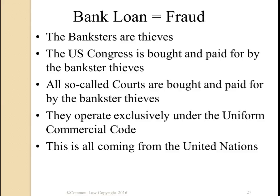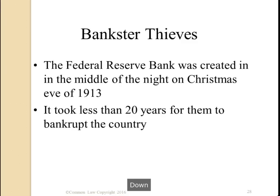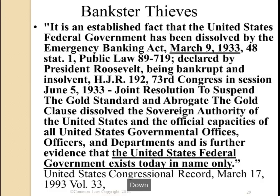The banksters are thieves. The U.S. Congress is bought and paid for by the bankster thieves. All so-called courts are bought and paid for by the bankster thieves — that's why they're kangaroo courts. They operate exclusively under the Uniform Commercial Code. This is all coming from the U.N. The Federal Reserve Bank was created in the middle of the night on Christmas Eve of 1913. It took less than 20 years for them to bankrupt the country. This is United States Congressional Record, March 17, 1993.